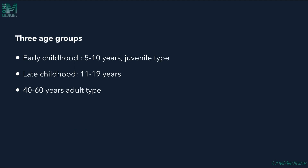There are three age groups: early childhood from 5 to 10 years, which is the juvenile type; late childhood from 11 to 19 years; and the adult type from 40 to 60 years. These are the age groups in which PRP presents.